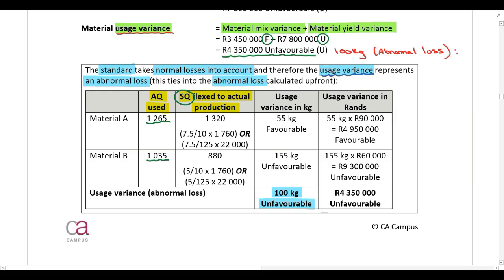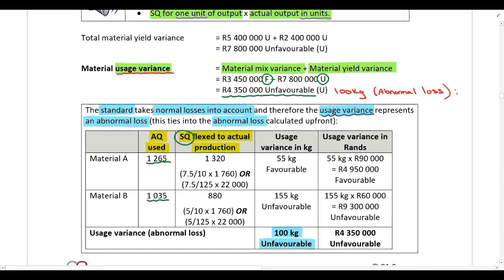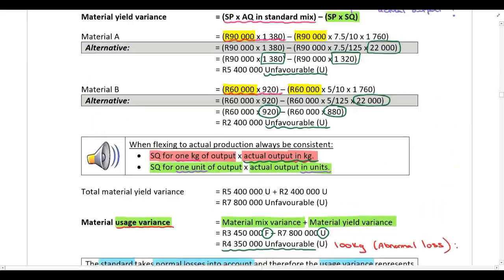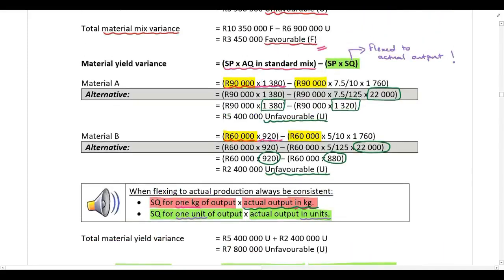You don't have to perform these calculations again — we already performed them when we calculated the yield variance. Here's the standard quantity flexed to actual output. Remember, there were two different alternatives, but that's how we calculated the standard quantity flexed to actual output.